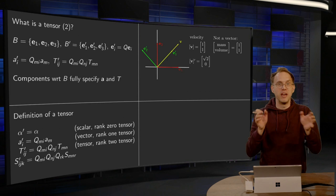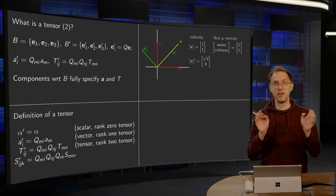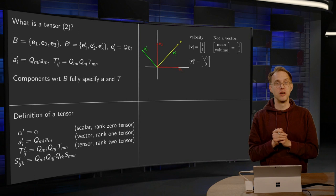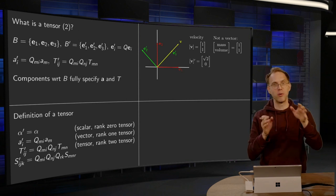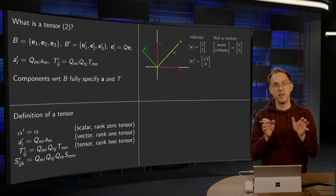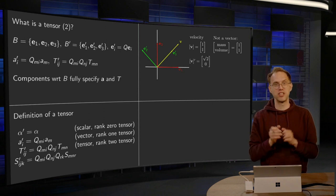we get combinations of mass and volume. They don't even have the same unit. So this would not be a vector. So you cannot just put stuff in a column and call it a vector. No, a vector has to satisfy certain transformation rules. Only then you can call it a vector. So this is quite subtle.